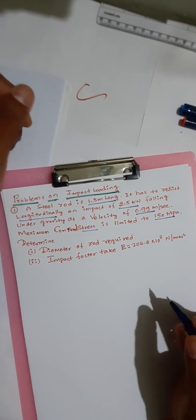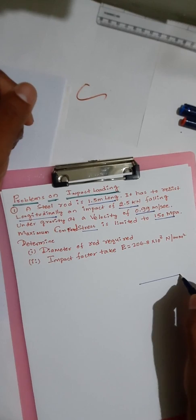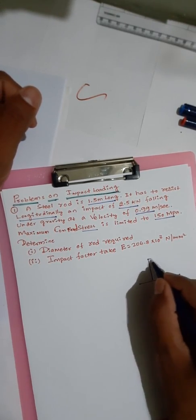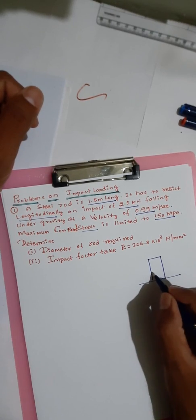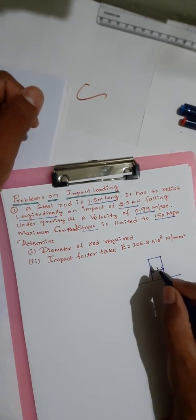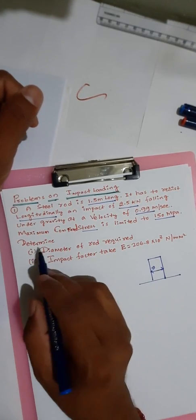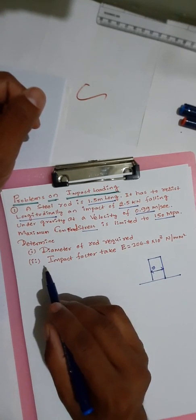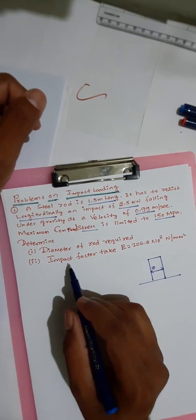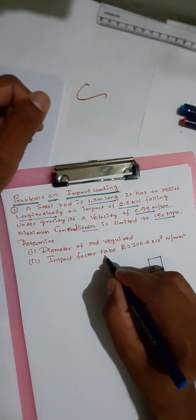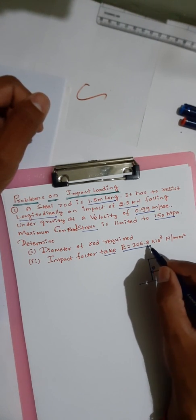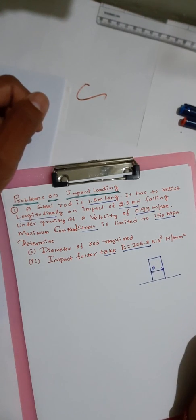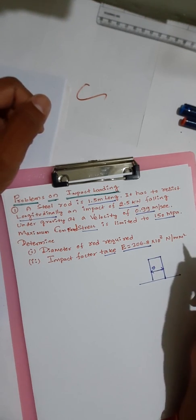For example, you can see here — if there is a steel rod, the diameter of the rod is unknown. We need to determine the diameter of the rod required and also the impact factor. Take Young's modulus E equal to 206.8 into 10³ N/mm².